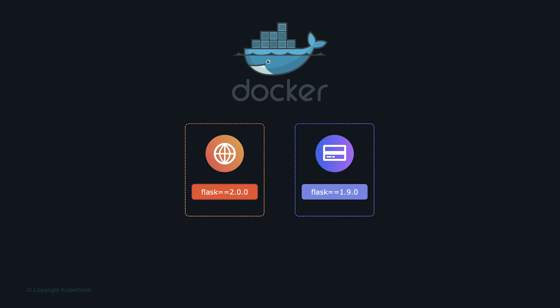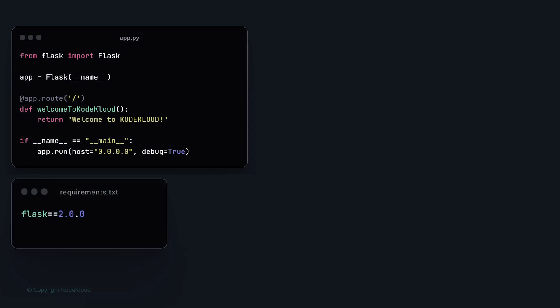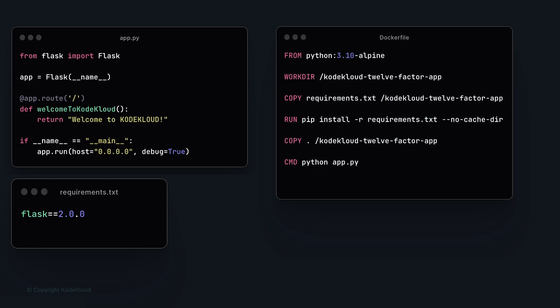This is where a more universal approach comes in: Docker containers. Docker allows us to run an application in a self-contained environment isolated from the host system. It is a more efficient and reliable way to manage dependencies. We have our application code, the `requirements.txt` file, and a Dockerfile to package the application with its dependencies into a Docker container.